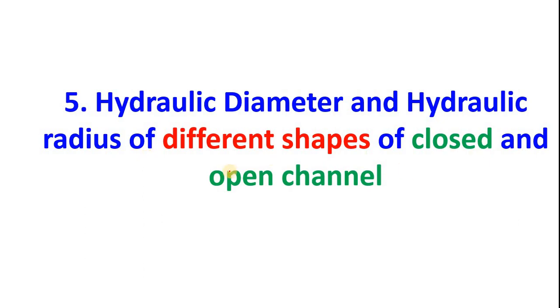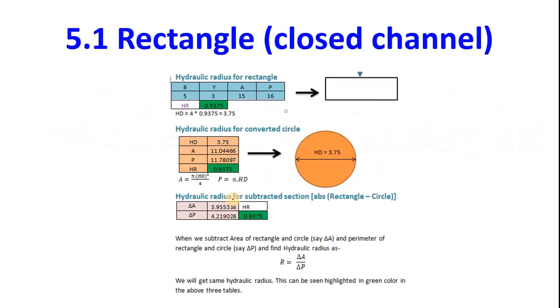Now we will look at hydraulic diameter and hydraulic radius for different shapes in both closed and open channels. We will see how hydraulic diameter is used to convert any shape into a circular shape. As a first example, we will consider a rectangular closed channel.